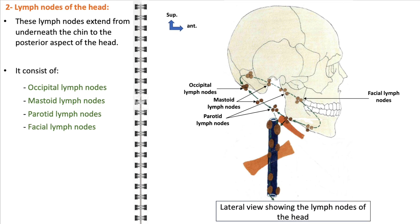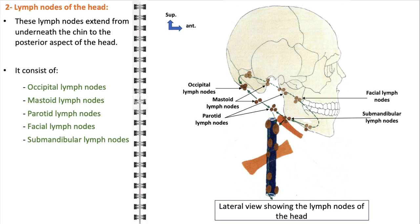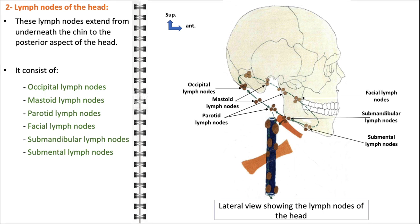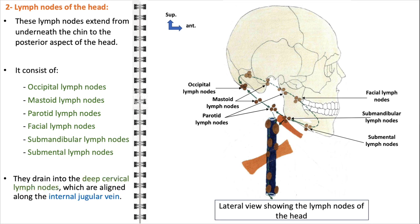Additional head lymph nodes include the facial lymph nodes, scattered along the face and draining various parts such as the cheeks, nose, and lips; the submandibular lymph nodes, located beneath the jaw, which drain the lower face, mouth, and anterior nasal area; and the submental lymph nodes, found under the chin, which drain the floor of the mouth and the tip of the tongue. All these lymph nodes ultimately drain into the deep cervical lymph nodes, aligned along the internal jugular vein, allowing for efficient transfer of filtered lymphatic fluid from the head to the deeper parts of the neck. The deep cervical lymph nodes act as a crucial checkpoint, further filtering the lymph before it re-enters systemic circulation.